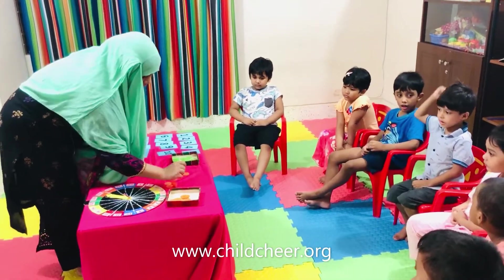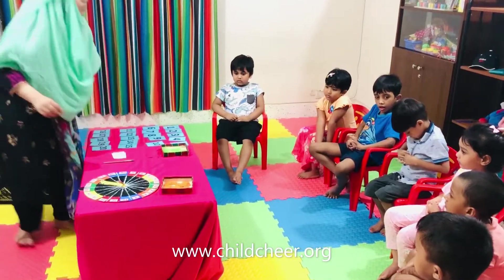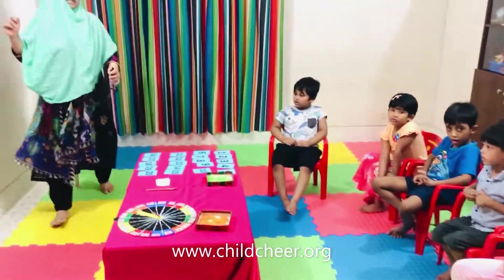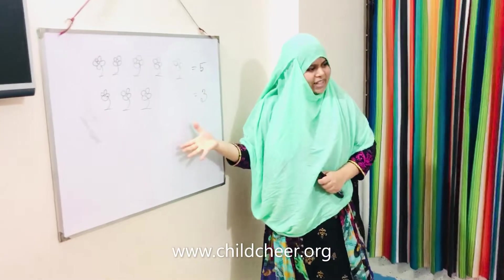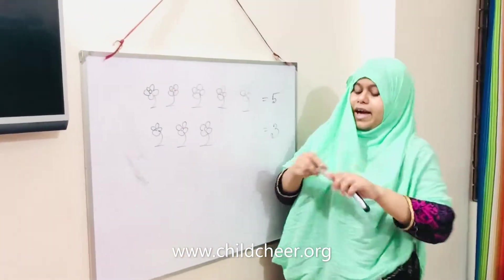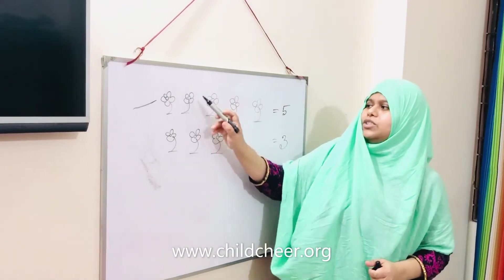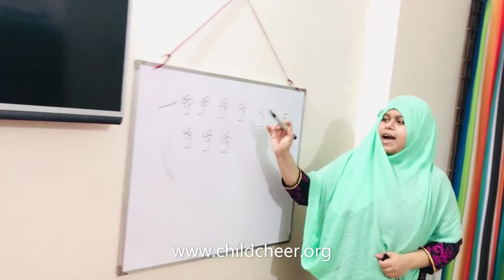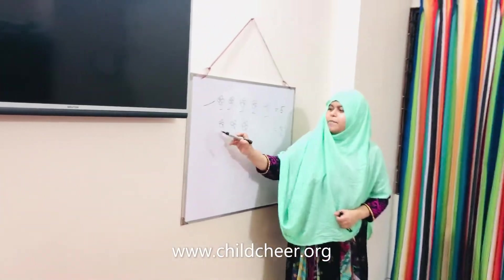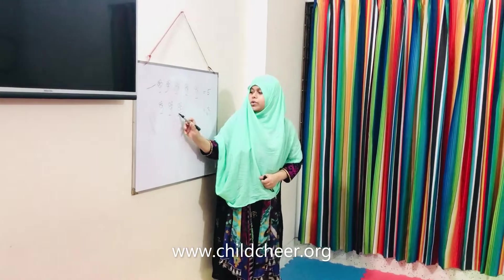Yes, I will call you. Now look at the board. There are some flowers, right? And in here, how many flowers are here? One, two, three, four, five — five flowers. And in here, how many flowers are there? One, two, three — three flowers.